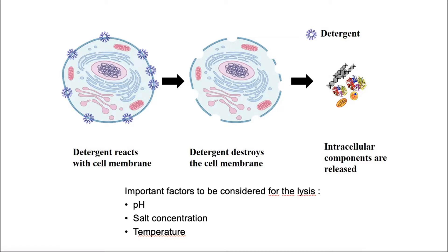They are composed of a polar hydrophilic head group and a non-polar hydrophobic tail, and are categorized by the nature of the head group as either ionic, non-ionic, or zwitterionic. Their behavior depends on the properties of the head group and tail.